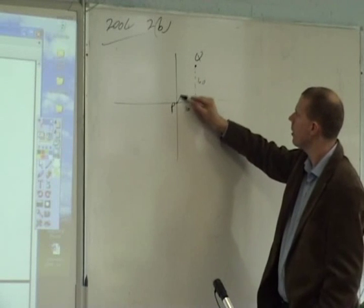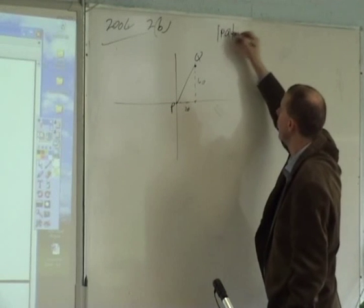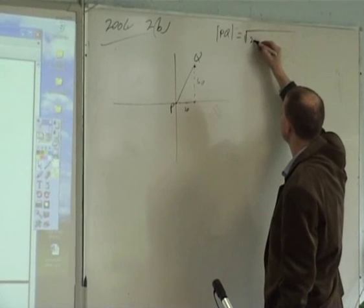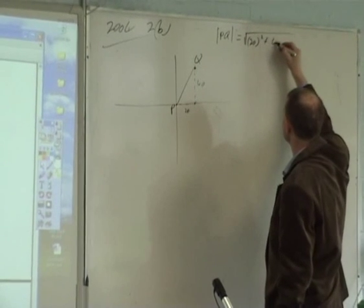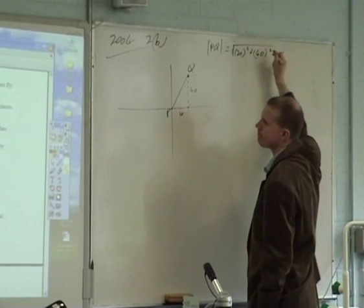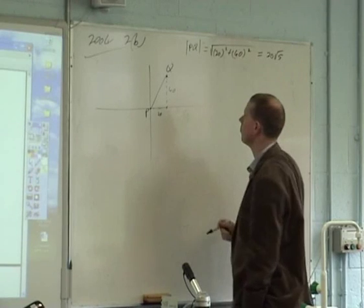If I need to, I can work out the distance PQ. How will I work it out? Pythagoras. The square root of 20 squared plus 40 squared equals 20 root 5.